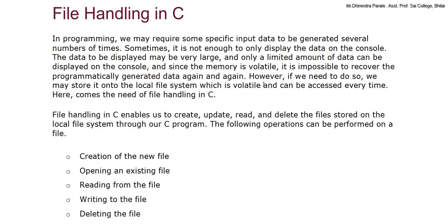In C programming, we may require some specific input data to be generated several number of times. Sometimes it is not enough to display the data on the console. The data to be displayed may be very large and only a limited amount of data can be displayed on the console. And since the memory is volatile, it is not possible to recover the programmatically generated data again. However, if we need to do so, we may store it on the local file system, which is non-volatile and can be accessed every time.